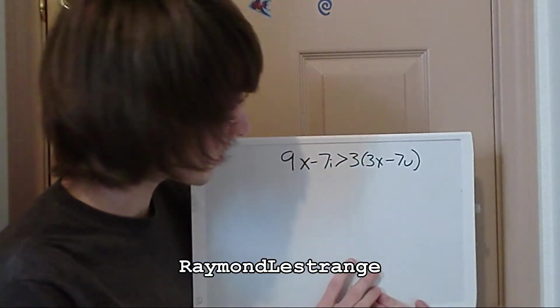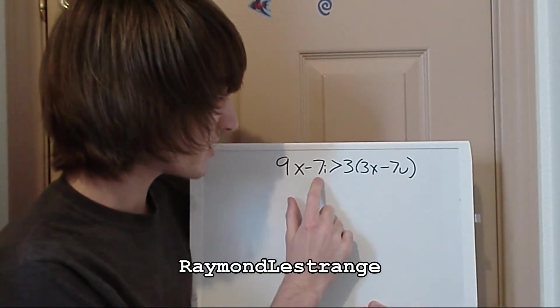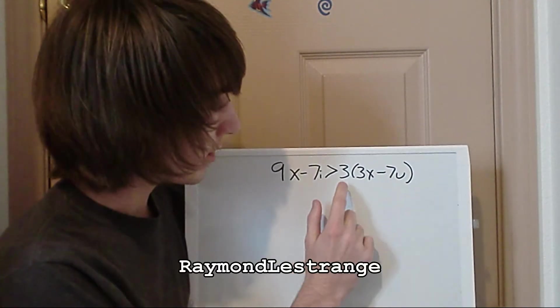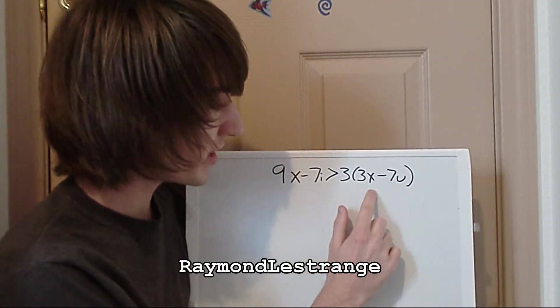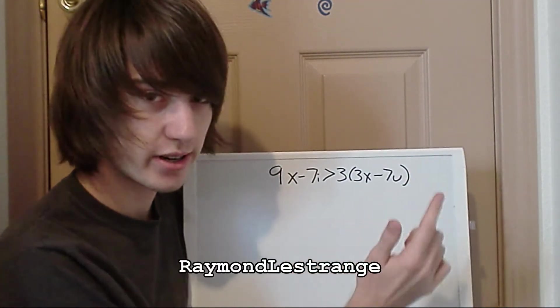So here it is right here. 9x minus 7i is greater than 3 parentheses 3x minus 7u ended parentheses.